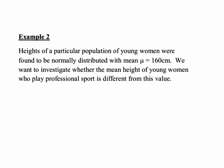In the second example, heights of a particular population of young women were found to be normally distributed with mean mu equals 160 centimetres. We want to investigate whether the mean height of women who play professional sport is different from this value. H0 again says no difference in means, so H0 would be that the true mean height of young women who play sport professionally is equal to 160 — that is, mu equals 160.